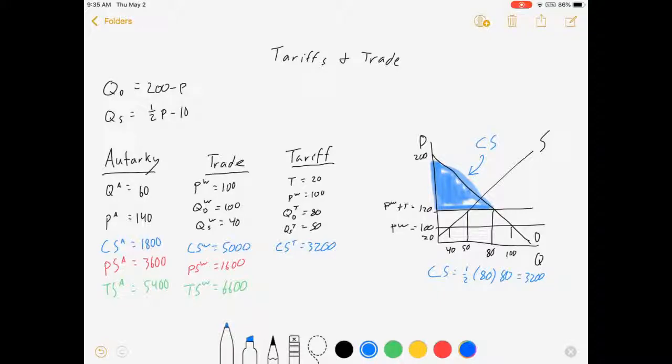Producer surplus, as I already shaded earlier, is all this stuff. Everything below price, above the supply curve. It's us selling above our willingness to pay, above our willingness to sell. And it is equal to, that thing is $50 high. And it's $50 across and $100 high. So that's going to be $2,500.